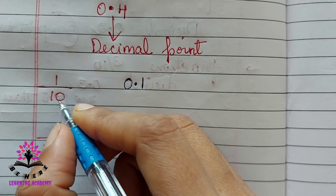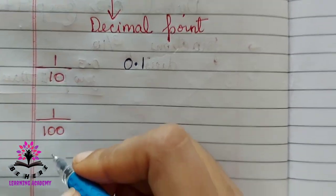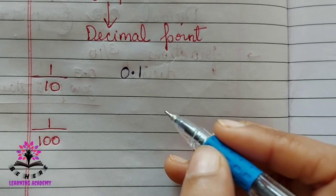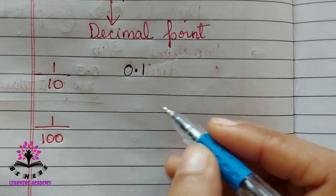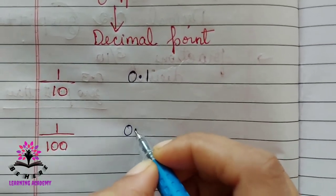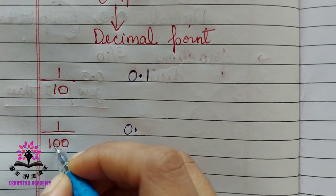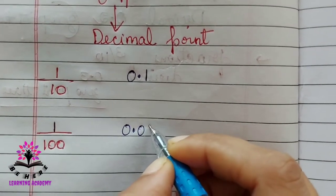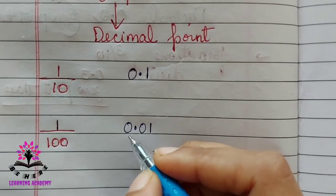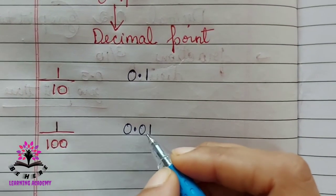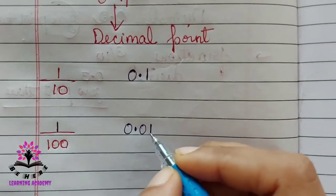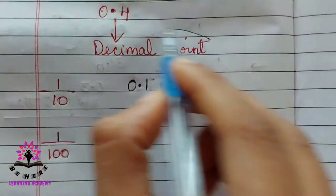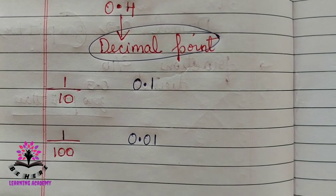Because there is one zero, you are writing 0.1. Suppose if I consider 1/100, how will you write in the form of decimals? First write this zero, put the decimal point, then there will be one more zero, then here there is one. So you write it as 0.01. We read this as 0.01. This point is the decimal point.